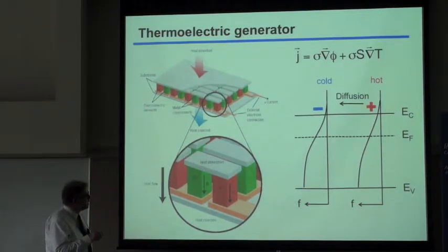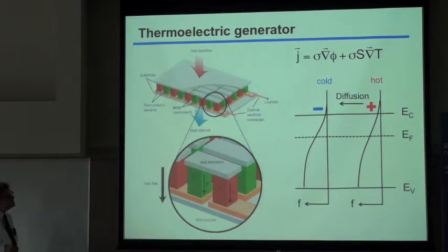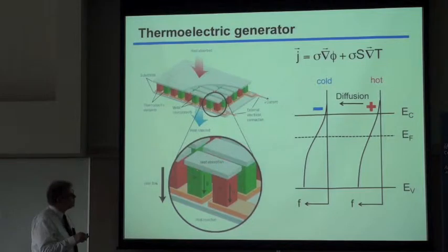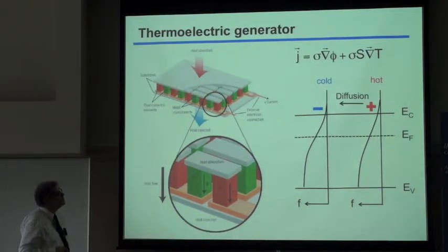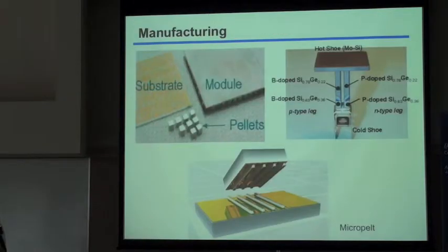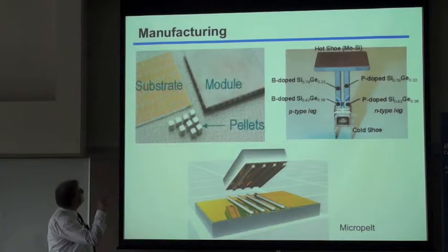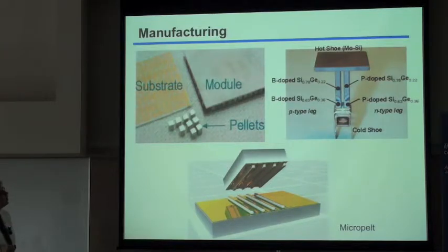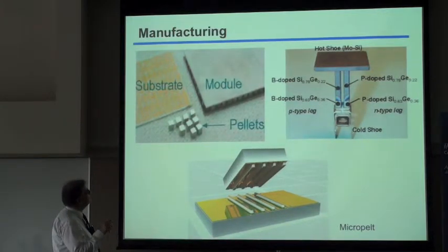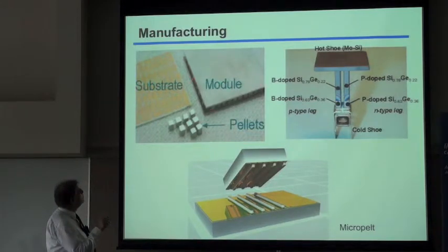This is a particular problem in realizing such devices, because you have to solder both materials to an electrical conductor, and the soldering has to survive a lot of heat cycles. Some very interesting materials physics is involved here. To actually manufacture something like this, you need a substrate, electrodes on the substrate, pellets representing the n- and p-type legs, and everything has to be soldered together, resulting in a module with a substrate for the hot end and one for the cold end.